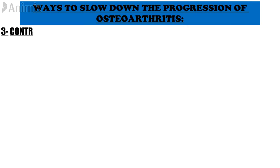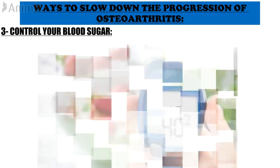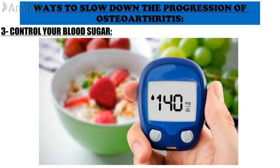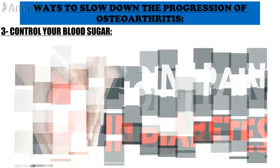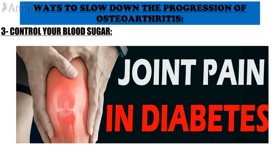3. Control your blood sugar. High blood glucose levels accelerate the formation of specific molecules with a higher sensitivity to mechanical stress, and are responsible for making cartilage stiffer. Cartilage loss can be the result of systemic inflammation triggered by diabetes. The recently identified connection between joint damage and diabetes may help explain why more than 50% of people in the United States who have received a diabetes diagnosis also have arthritis.